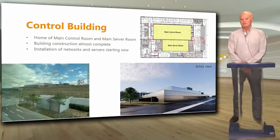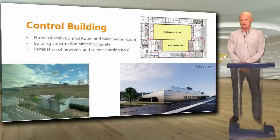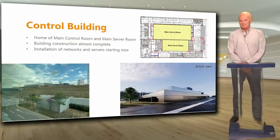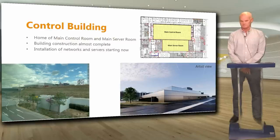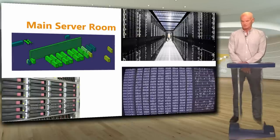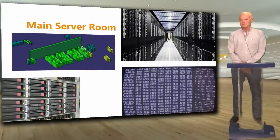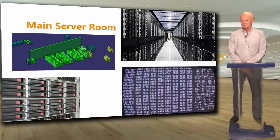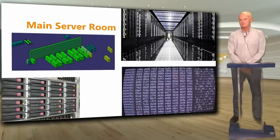The control building is the home of the main control room and the main server room. Almost all the area inside this building is used by those two. Building construction is almost complete — you can see the artist's view and the actual recent photo. Installation of networks and servers is starting now. The main server room contains about 100 cabinet cubicles with networks, servers and storage — it's really a data center, and this is where most of the software executes.